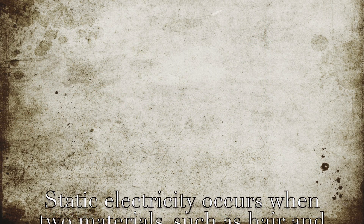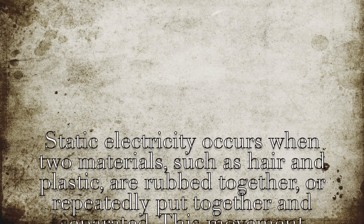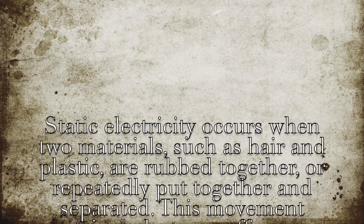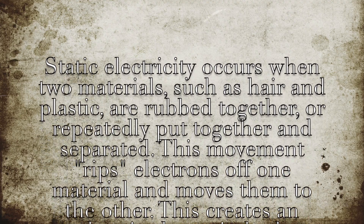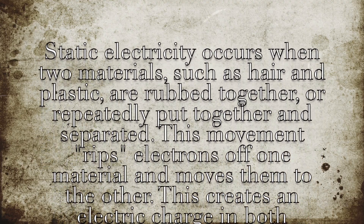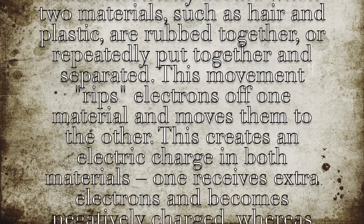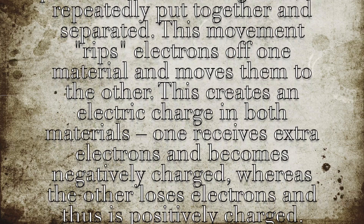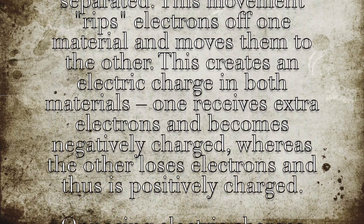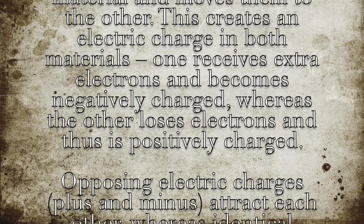Static electricity occurs when two materials, such as hair and plastic, are rubbed together, or repeatedly put together and separated. This movement rips electrons off one material and moves them to the other. This creates an electric charge in both materials — one receives extra electrons and becomes negatively charged, whereas the other loses electrons and thus is positively charged.